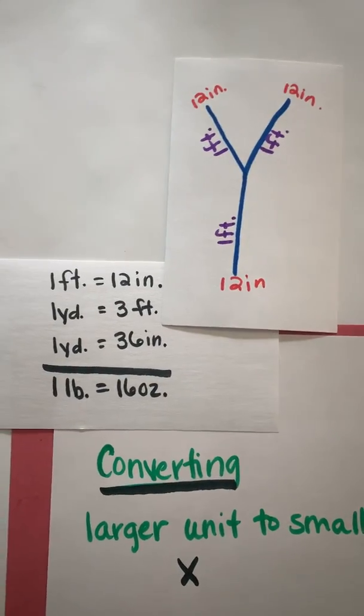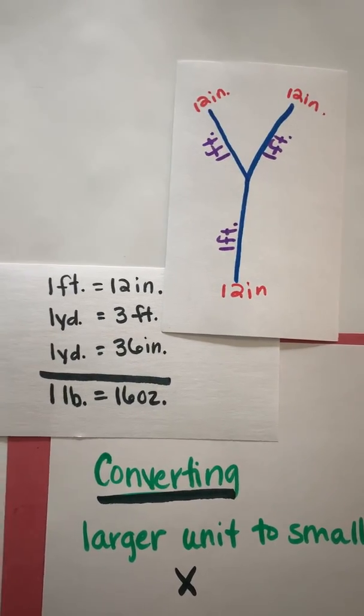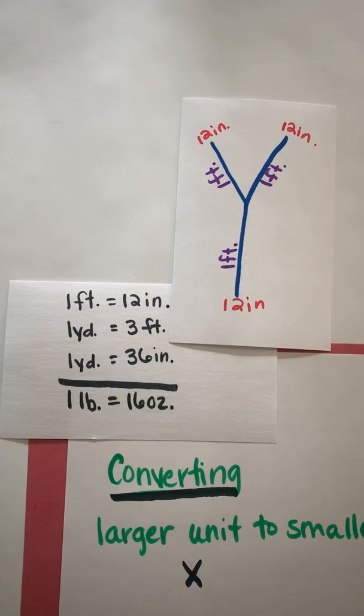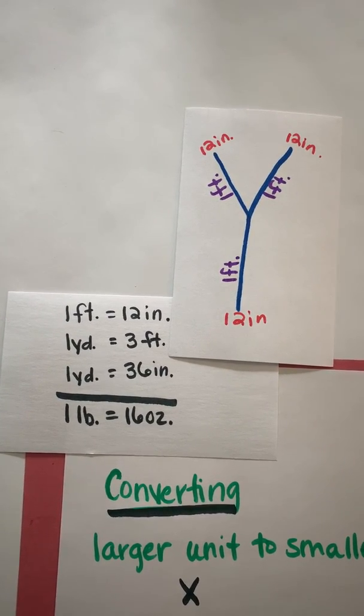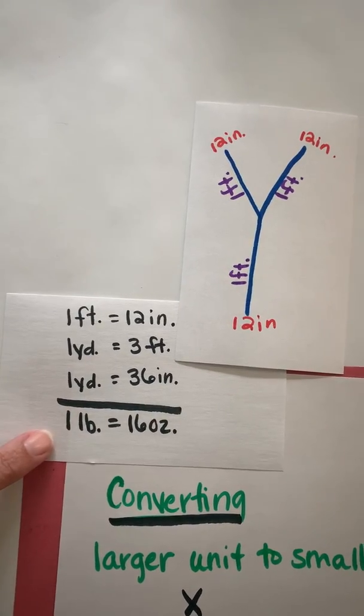I want to review the different customary units that you work with in fourth grade and fifth grade. One foot is 12 inches, one yard is three feet, one yard is equal to 36 inches, and one pound is equal to 16 ounces. So you've got your length here and then you've got your weight or your mass.